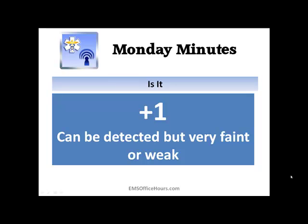Now, talking about plus 1 — that's when the patient's pulse is detected but it's very faint or very weak. We can verbally tell them the patient's heart rate is faint or very weak, but by telling them it's plus 1, that tells them the universal description that it's a weak pulse — detectable but very weak or very faint. By using plus 1, you've given that consistent description that they're already used to and that they're documenting.